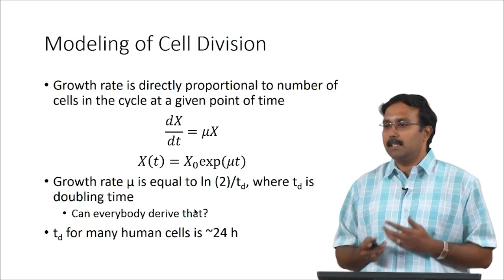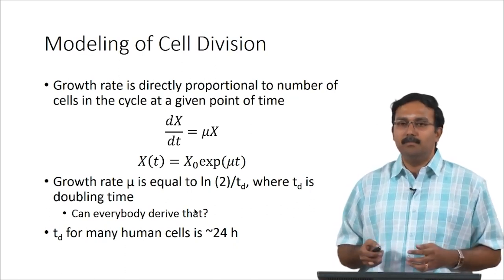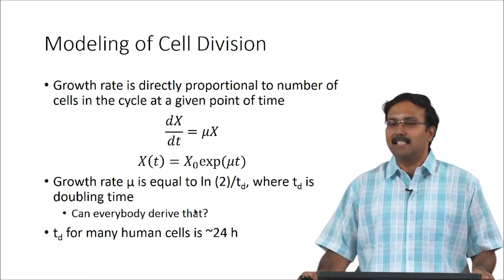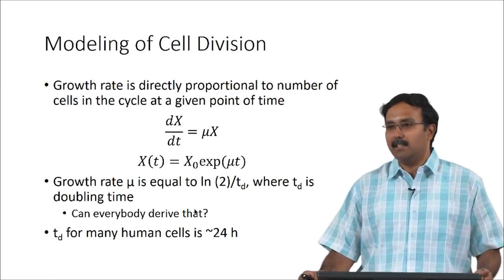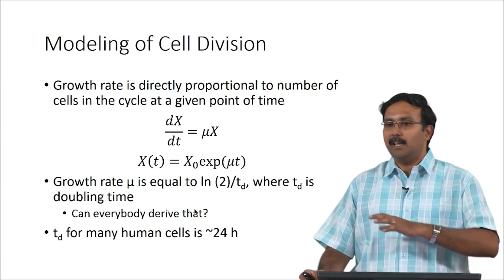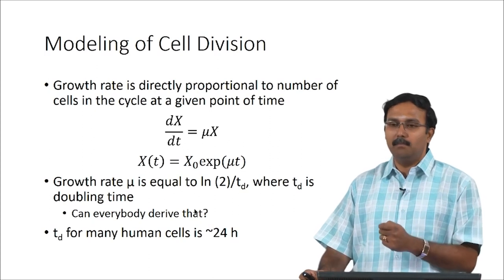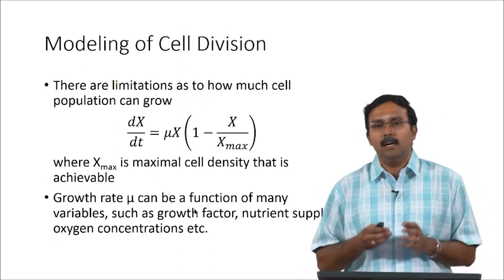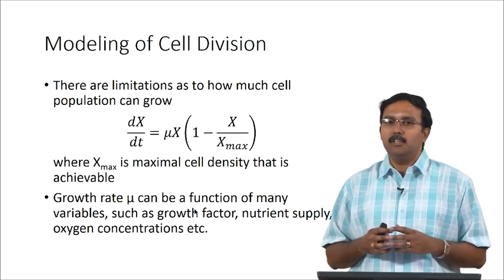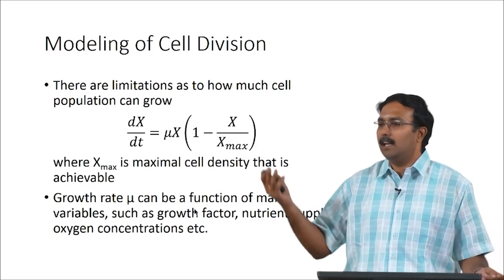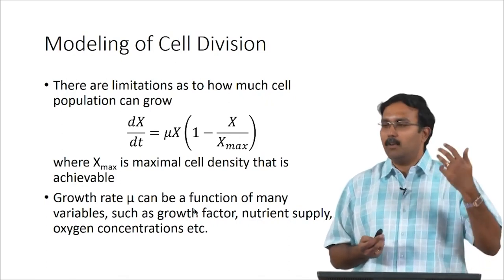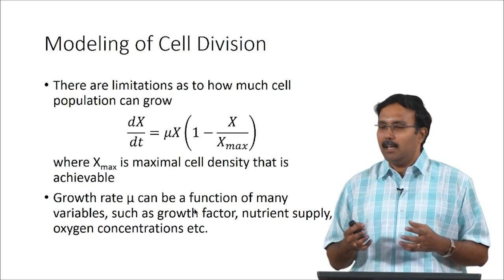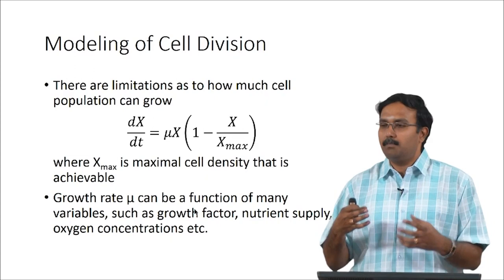The doubling time for most human cells is about 24 hours — mammalian cells are not like E. coli, which doubles in roughly 20 minutes. Because of this slow growth, mammalian cells are less prone to contamination issues that are major limitations in bacterial culture. However, mammalian cells cannot keep dividing to very large numbers because there is limited space; in bacterial culture you can multiply from a small inoculum to very large numbers provided nutrients are supplied.